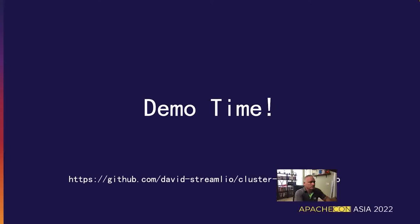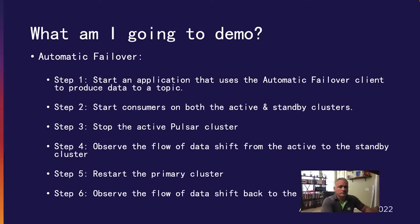Next, I will demonstrate both of these failover clients in action. The source code for this demo is available in the GitHub repo shown here. For the automatic failover demo: first, I will start an application that uses the automatic failover client to produce data to a topic. Next, I will start consumers on both the active and standby clusters so we can see where the data is flowing in real time. After some messages start flowing, I will stop the active Pulsar cluster, and we should observe the flow of data shift from the active to the standby cluster automatically, without any intervention. Finally, I will restart the primary cluster to demonstrate that data switches back to the primary.